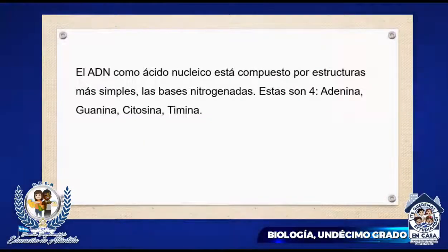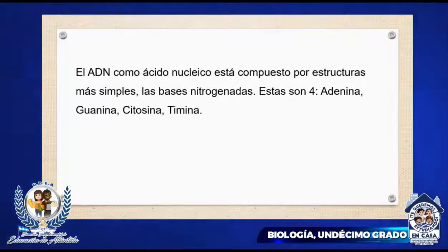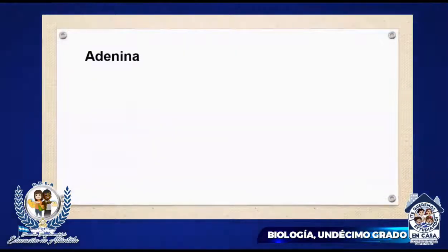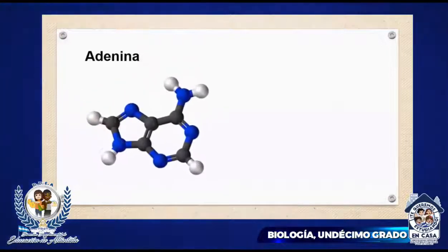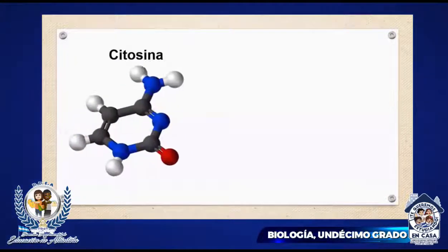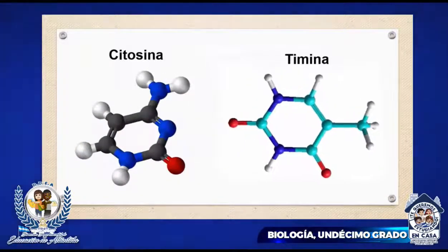El ADN como ácido nucleico está compuesto por estructuras más simples: las bases nitrogenadas. Estas son adenina, guanina, citosina y timina. El orden que adoptan estas bases determinará nuestro código genético. Aquí tenemos las estructuras de estas bases nitrogenadas: la adenina, la guanina, la citosina y la timina.